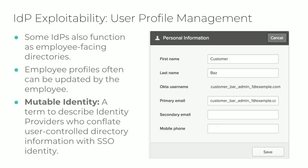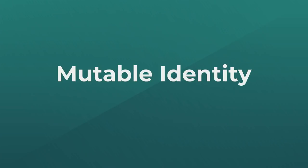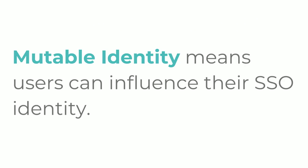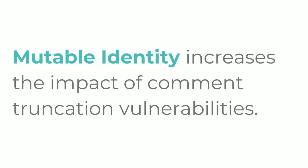Another potentially risky IDP feature is account lifecycle functionality such as user profiles. If an IDP also functions as an employee directory, employees may be able to do self-service profile management, such as updating their first name or phone number. If an identity provider allows a user to edit the data used for SSO identity, they may have some influence over how they're identified. I'll use the term 'mutable identity' to describe user profiles that exhibit this behavior. Mutable identities are interesting because users are able to influence their SSO identity, which increases the impact of comment truncation vulnerabilities — just like user registration may allow an attacker to choose their own identity so they can truncate it however they please.